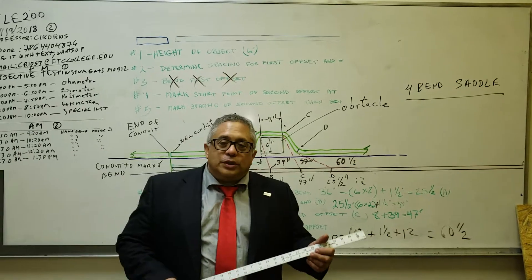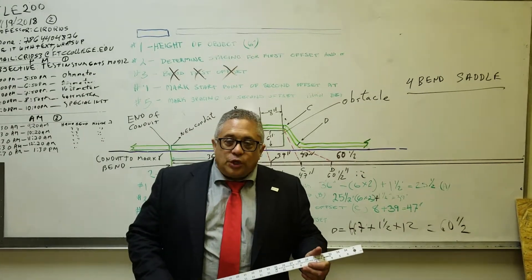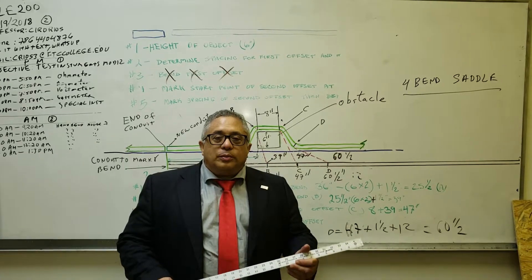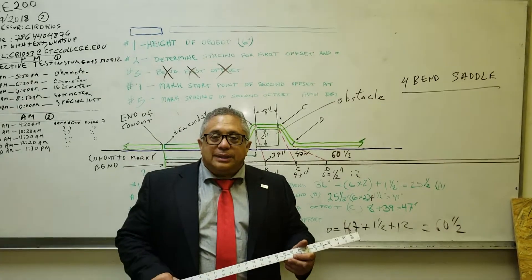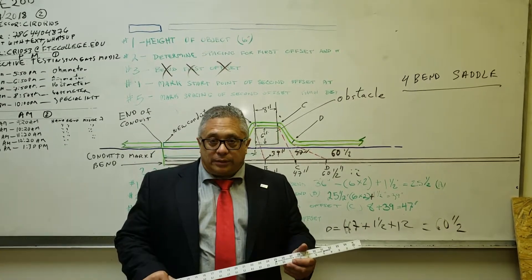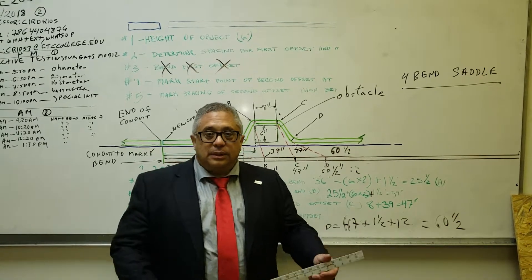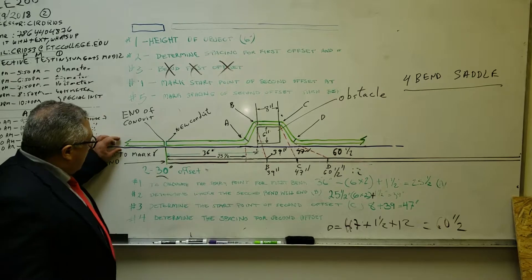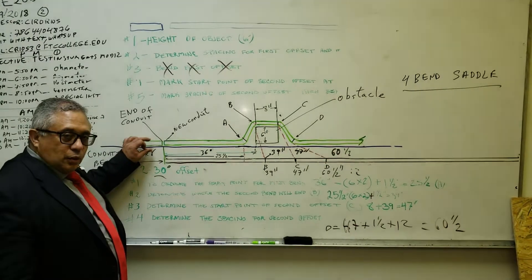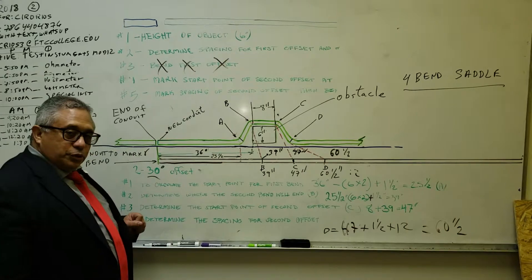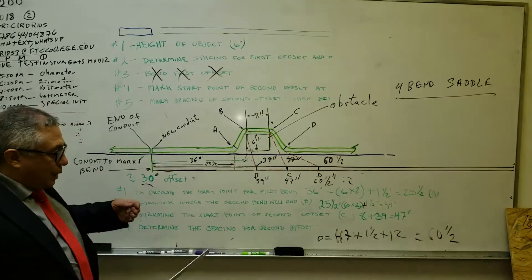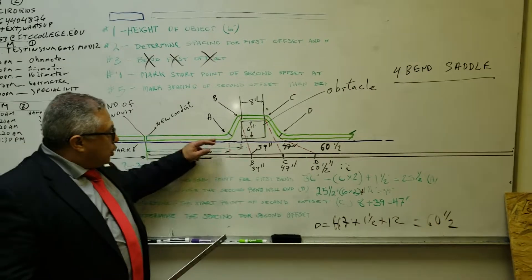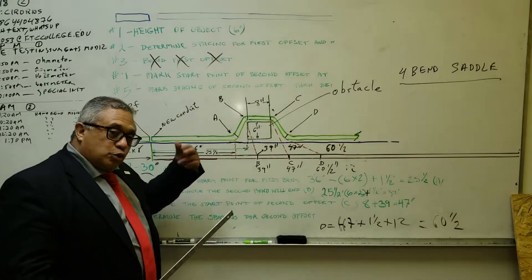When you will be using a four-bend saddle, you will use it when you want to overcome an obstacle that is square or rectangular. What is the occasion? You are lying down your conduit, and you end in a certain position. When you get a new conduit to continue lying down, you realize that you have an obstacle to overcome.